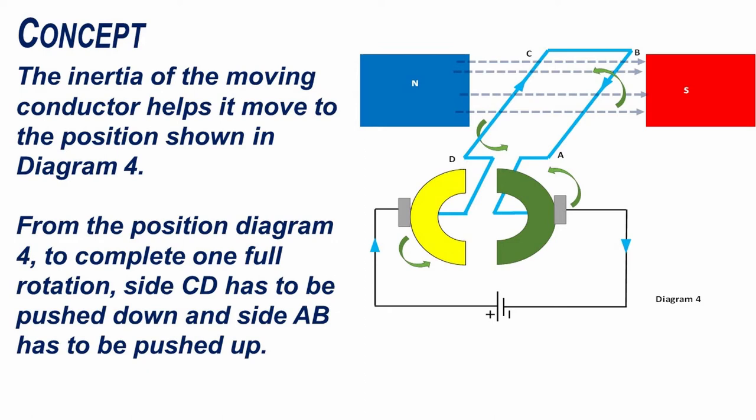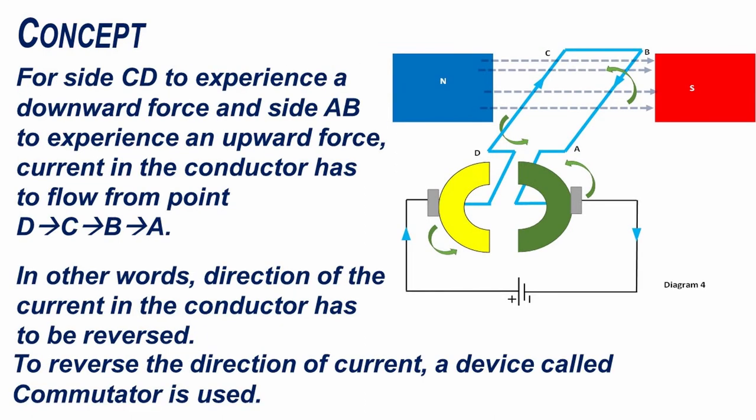From the position shown in diagram 4, to complete one full rotation, side CD has to be pushed down and side AB has to be pushed up. For side CD to experience a downward force and side AB to experience an upward force, current in the conductor has to flow from point D to C to B to A. In other words, the direction of the current has to be reversed.